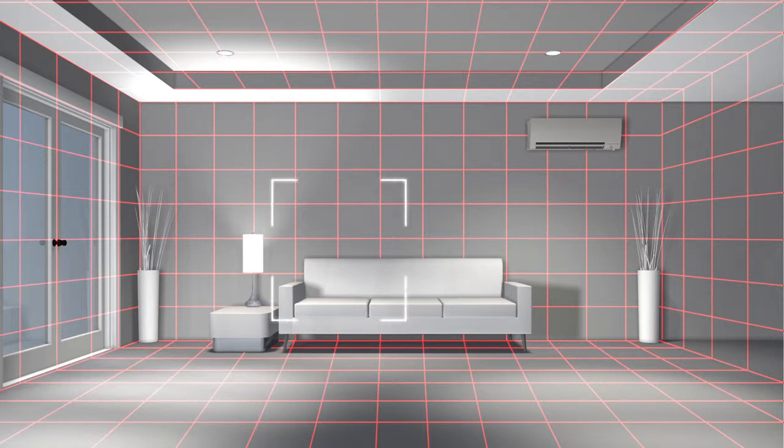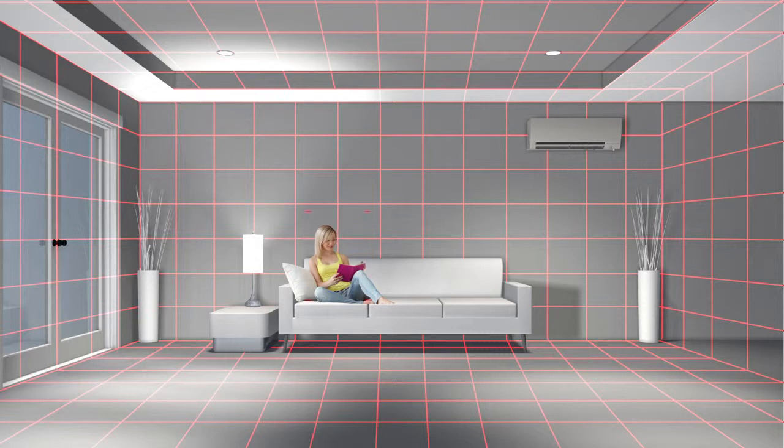When the space is occupied, the 3D IC Sensor identifies the heat signatures and directs the indoor unit to apply cool or warm air as needed.